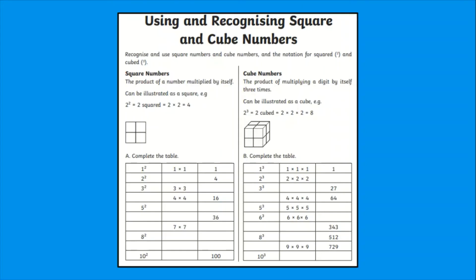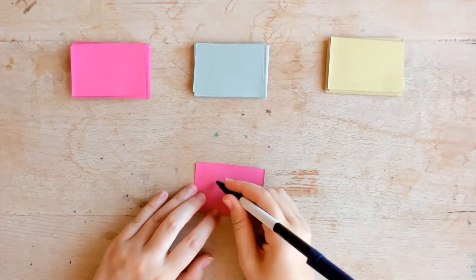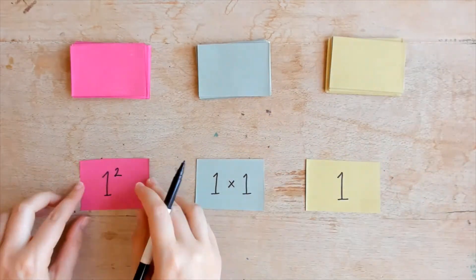And that is exactly the learning targeted by this worksheet. Children must first complete a table, identifying the notation for the squared or cubed number, writing this out as a calculation using multiplication, before finding the value of the squared or cubed number.